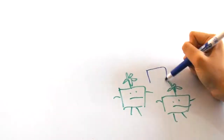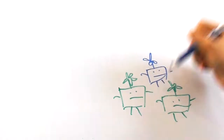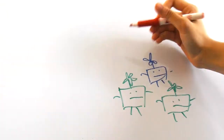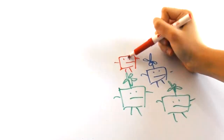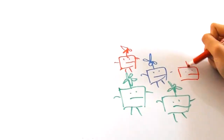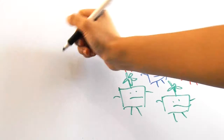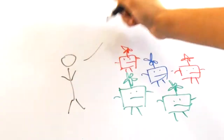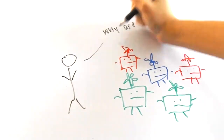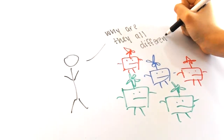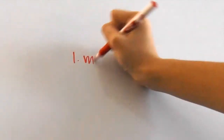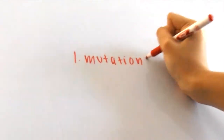But Darwin didn't actually know where the variation came from — he just knew that the individuals were all different. Well, that's changed because now we know where variation comes from. Most of the time, it's from mutations and sexual reproduction.